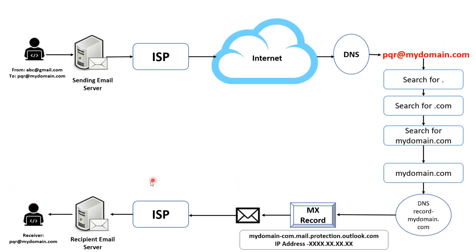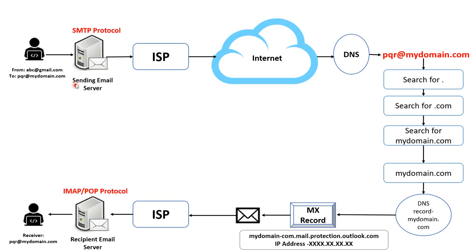If the recipient pqr@mydomain.com is present, the email is delivered to that user. Just as there are size and attachment limitations on the sending email server, similar restrictions can be configured on the recipient email server as well — such as the maximum email or attachment size accepted, or the types of attachments that are allowed.